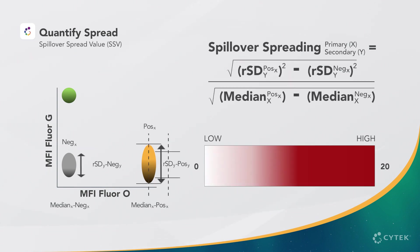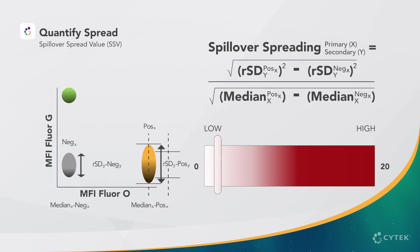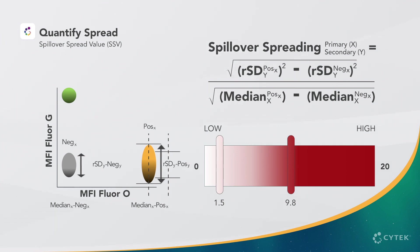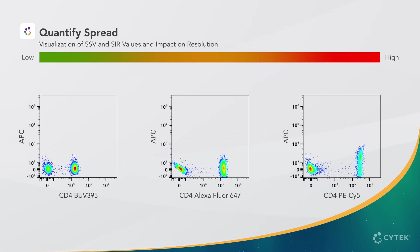With SSV, we are measuring the distribution of our single-stained orange sample into the green parameter relative to the negative population. We take the MFI and robust standard deviation of both populations into account to generate a value between 0 and 20. Low values, such as 1.5, represent little to no spread, while higher values, like 9.8, indicate high spread. In addition to panel design, the SSV is also useful to compare how a dye pair performs between instruments. Let's use data from unmixed CD4 single-stained samples to assess how spread correlates with SIR and SSV.